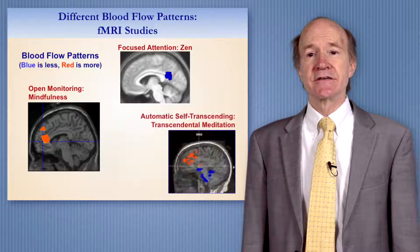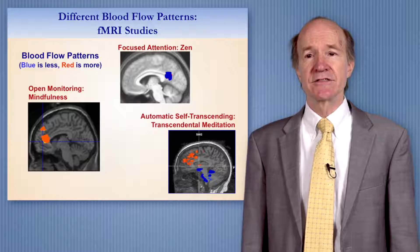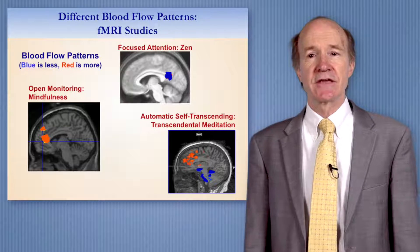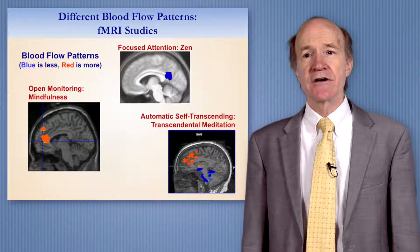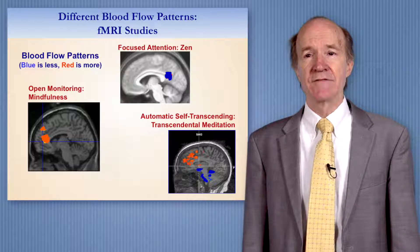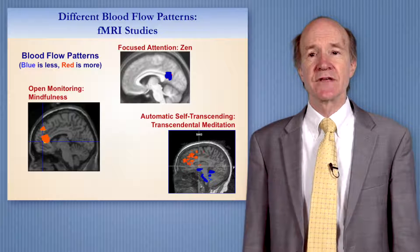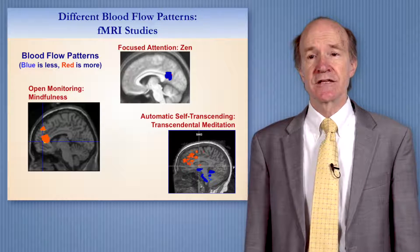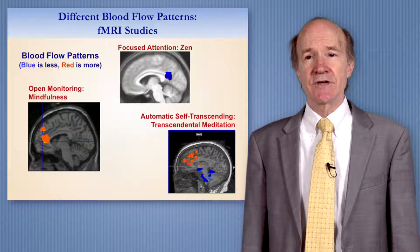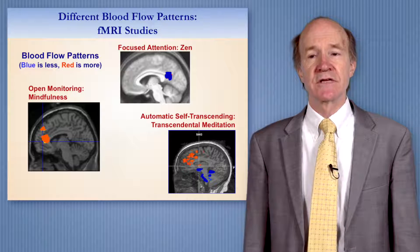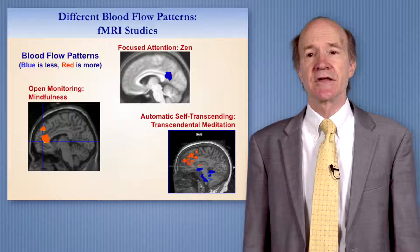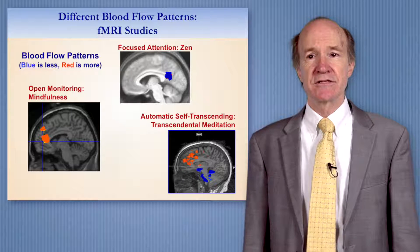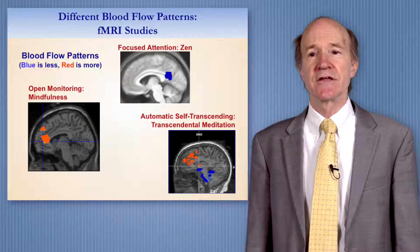These are blood flow patterns during Transcendental Meditation practice in the automatic self-transcending category. You notice large areas of the front are active — this is the part of the brain involved in higher cognitive functioning, attention, and executive control. At the same time, there's decreased blood flow, indicated by the blue color, in the brain stem. This is a unique pattern of restful alertness, which is not reported in other meditations.